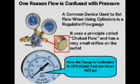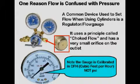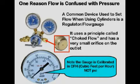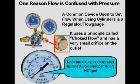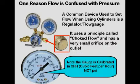Some confusion is created by a device used on many cylinder installations called a regulator flow gauge. It does set pressure, usually varying from 40 to 80 PSI, above a very small orifice — typically 0.025 inch diameter. Note the output gauge is calibrated in CFH, not PSI. This device uses a principle called choke flow, to be covered later.